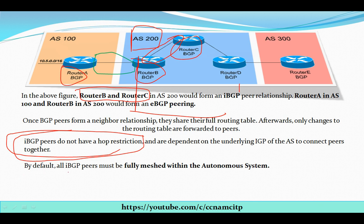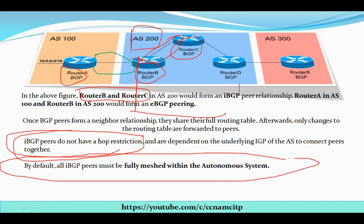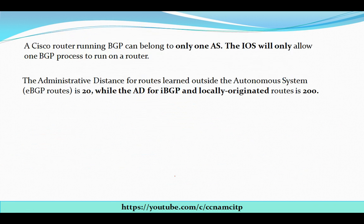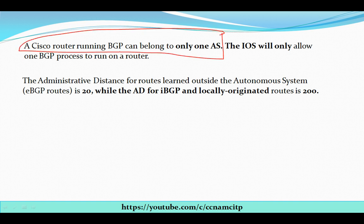By default, all IBGP peers must be fully meshed within the autonomous system. I will show in the next videos how to configure a fully meshed network. Additionally, a Cisco router running BGP can belong to only one AS — the IOS will only allow one BGP process to run on a single router.